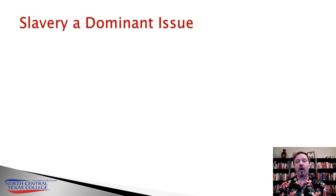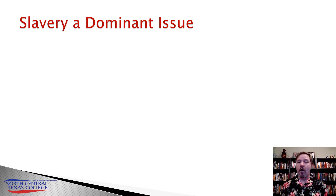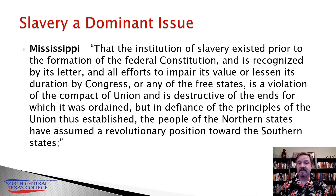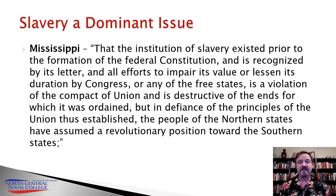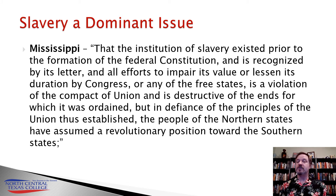If you hear arguments for other issues — state rights, economic reasons — you can always point to the actual articles of secession for each of the Southern states. Because typically those articles of secession will explicitly state slavery as the reason they're leaving. Take Mississippi: it says the institution of slavery existed prior to the formation of the federal constitution, and all efforts to impair its value or lessen its duration by Congress or any of the free states is a violation of the Compact of Union. They're attacking our institution of slavery, and therefore we're leaving.